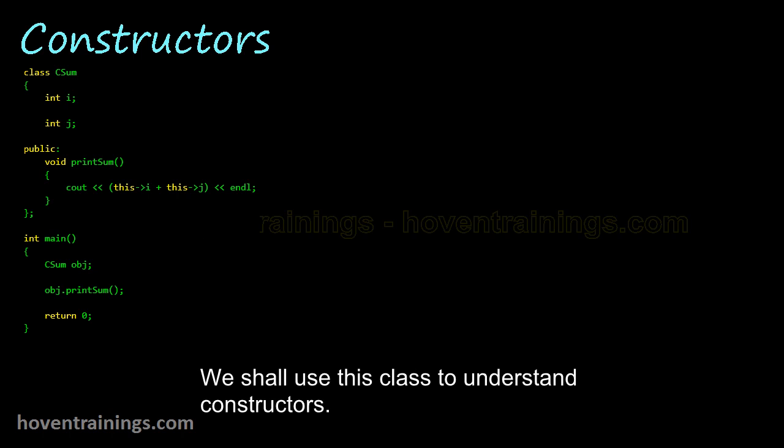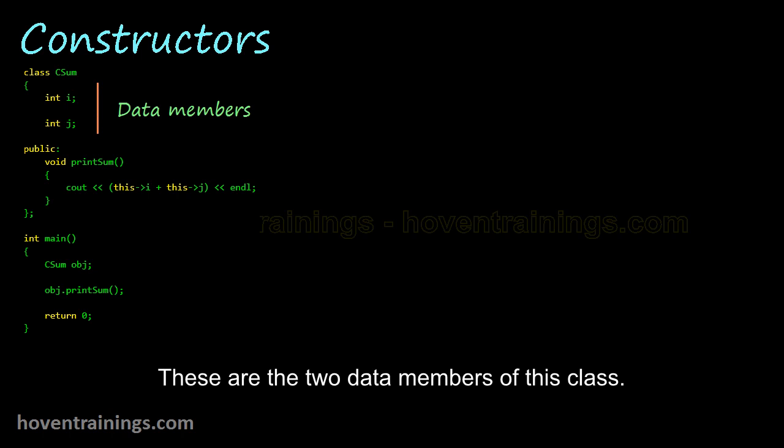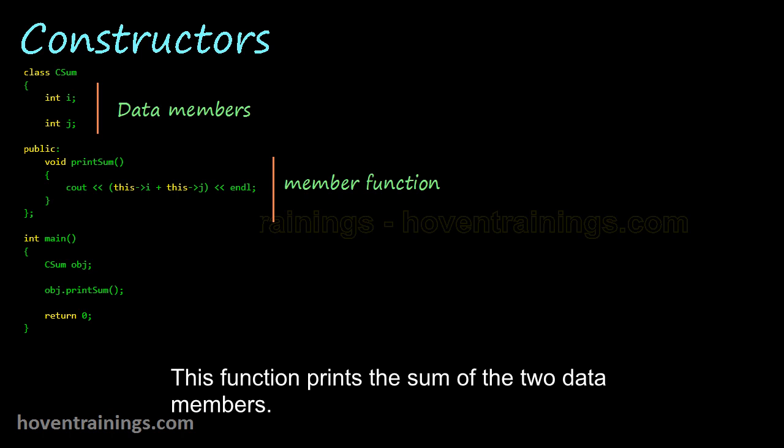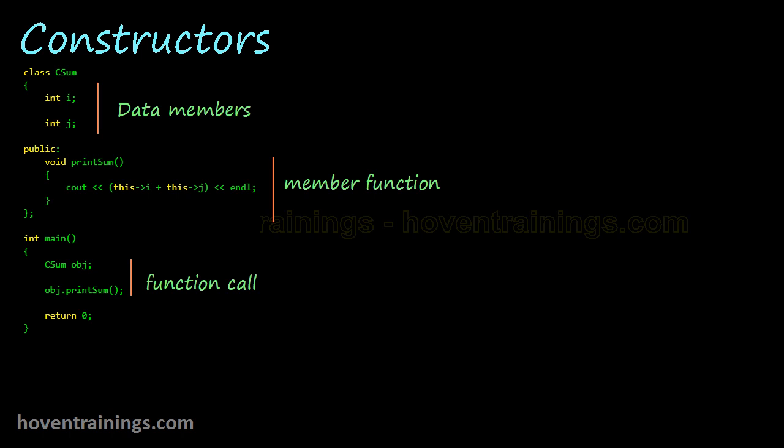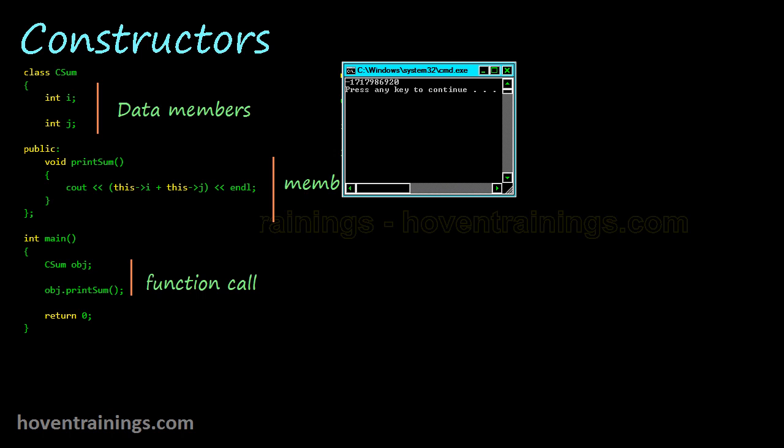We shall use this class to understand constructors. These are the two data members of this class. This function prints the sum of the two data members. Here we are creating an object and calling the function. When this program is run we get this absurd output.